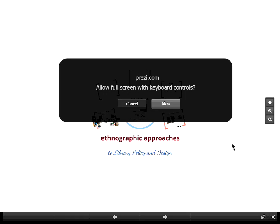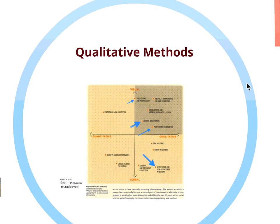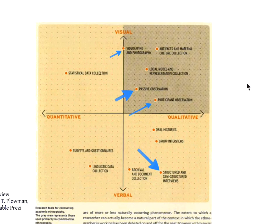I've shared the screen and I'm sharing this Prezi with you. Those of you who know about qualitative methods have probably seen this before — it's a continuum talking about quantitative and qualitative methods. I've highlighted with blue arrows four things I've been using here in the library: videotaping and photography, passive observation, participant observation, and structured and semi-structured interviews.